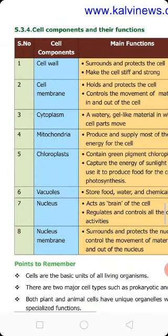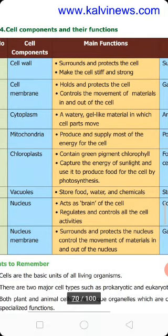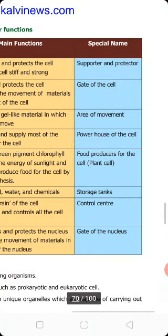Another important cell component is mitochondria. Mitochondria are present in both plant and animal cells. Mitochondria are involved in the process of cellular respiration, which produces energy stored in the form of ATP. Because they produce and supply most of the energy for the cell, mitochondria are otherwise called the powerhouse of the cell.